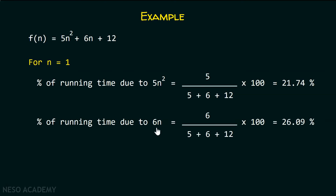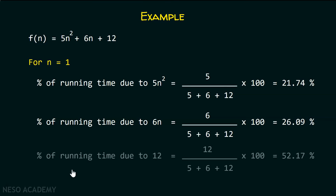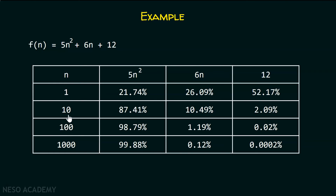The percentage due to 6n is 6 divided by (5 + 6 + 12), times 100, which is 26.09%. And 12 contributes 52.17%, seeming to take the most time. But we have to see the growth rate. For n equal to 10, 5n² is contributing 87.41% of the running time, growing significantly from 21.74%. Meanwhile, 6n decreases from 26.09% to 10.49%, and 12 drops to just 2.09%.